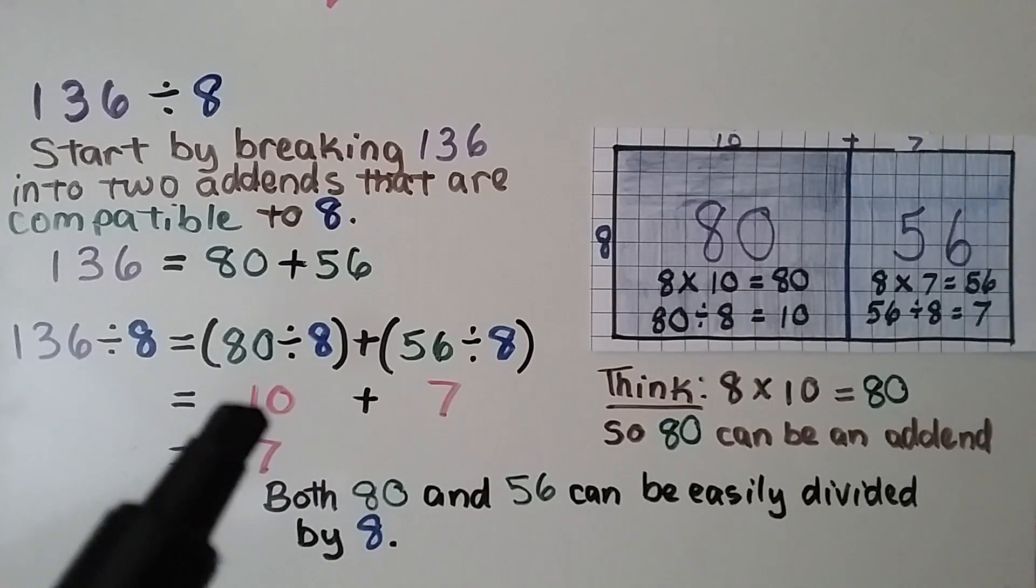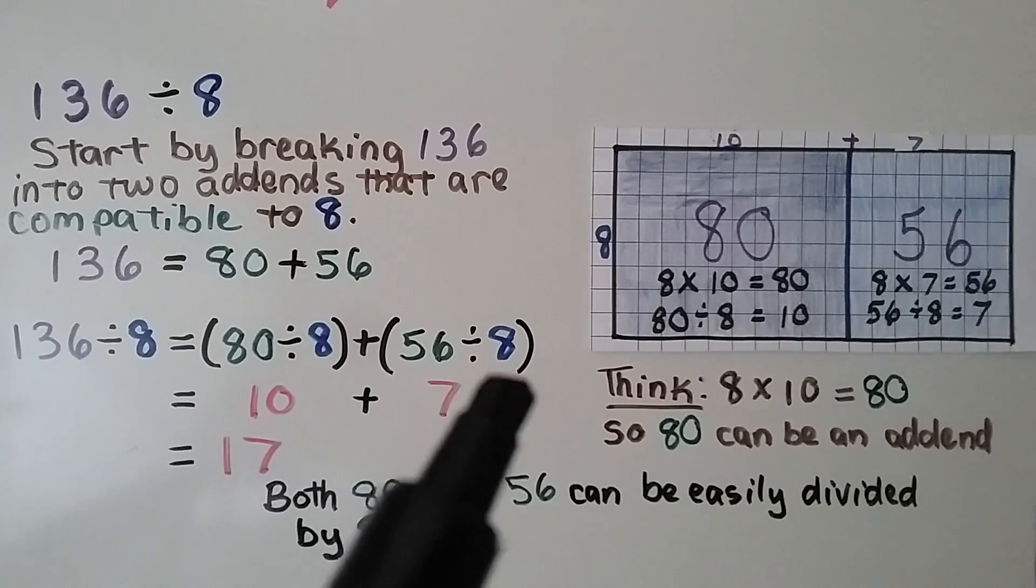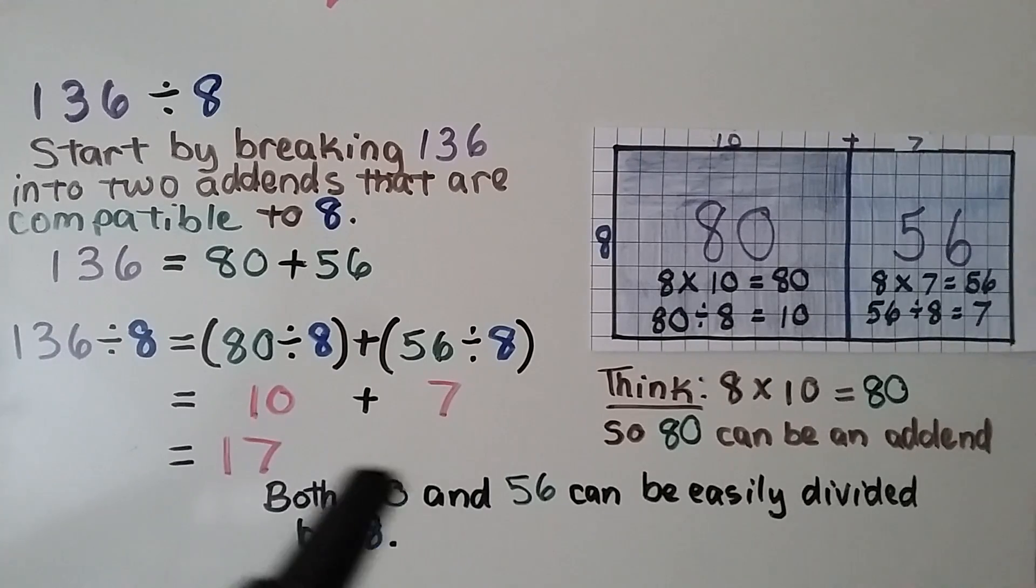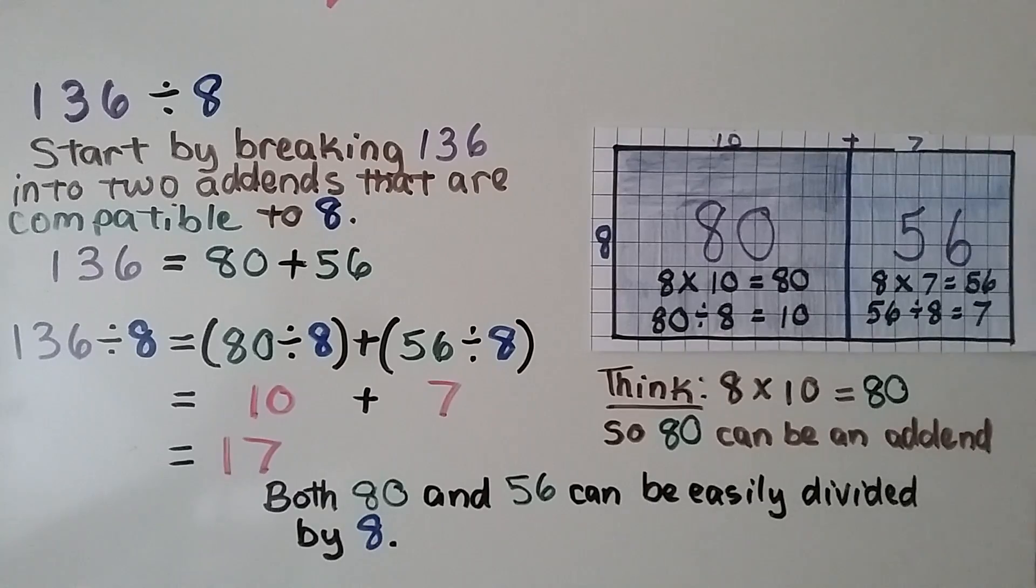So 136 divided by 8 is equal to 80 divided by 8 plus 56 divided by 8. 80 divided by 8 is equal to 10, 56 divided by 8 is equal to 7, and 10 plus 7 is equal to 17.